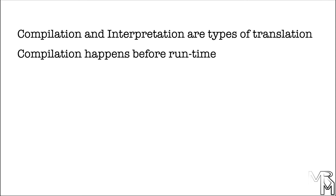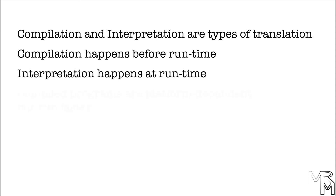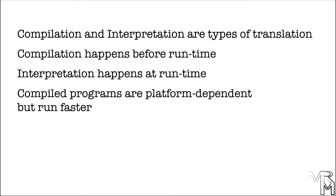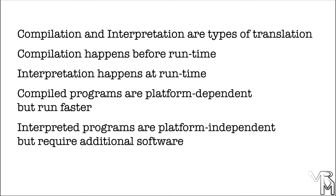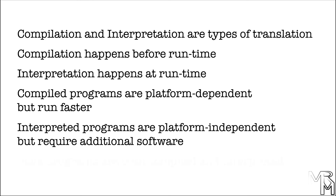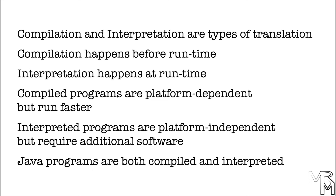Compilation happens before runtime, while interpretation happens at runtime. Compiled programs are platform-dependent, but generally run faster than their interpreted analogues. Interpreted programs are generally platform-independent, but require additional software to run. Java is both a compiled and interpreted programming language. Java source code is compiled to bytecode and then interpreted by JVM into machine code at runtime, which makes Java programs largely platform-independent.